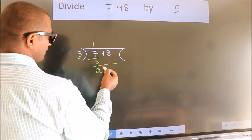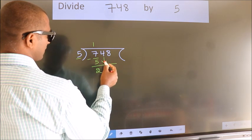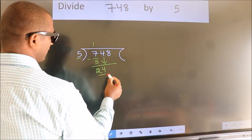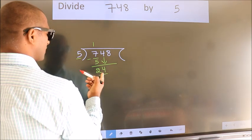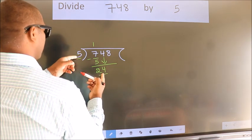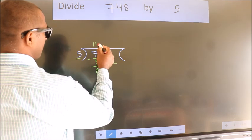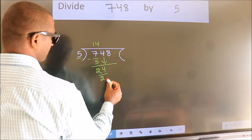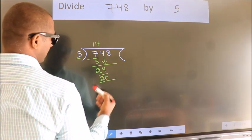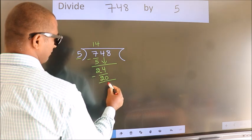After this, bring down the beside number, so 4 down, making 24. A number close to 24 in the 5 table is 5 fours 20. Now we subtract. We get 4.